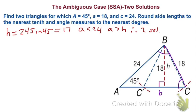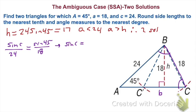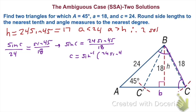For the first triangle, to find angle C: sine of C over 24 equals sine of 45 over 18. So sine of C equals 24 times sine of 45, all over 18. Taking the inverse sine of both sides: C equals inverse sine of (24 sine 45 over 18). Plug this entire expression into the calculator without pre-computing. The result is approximately 70.528 degrees. I'm rounding to the third decimal for now and will use 70.53 in the next step.